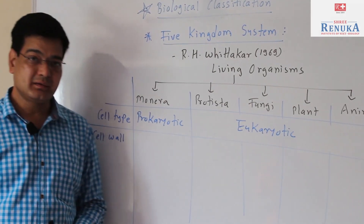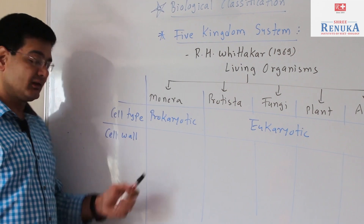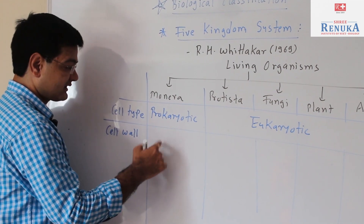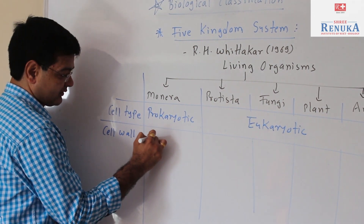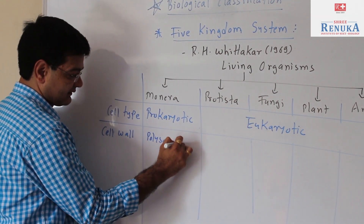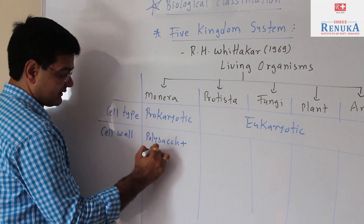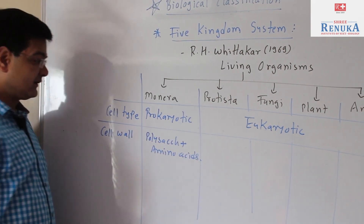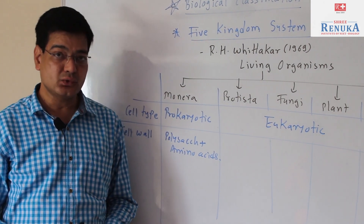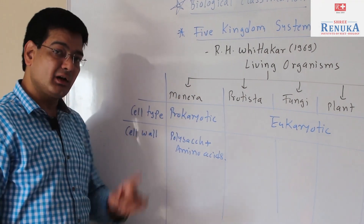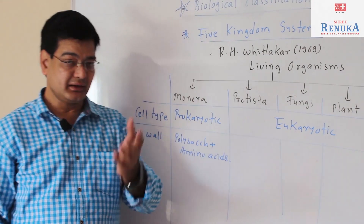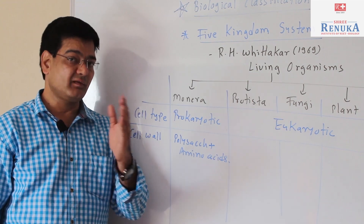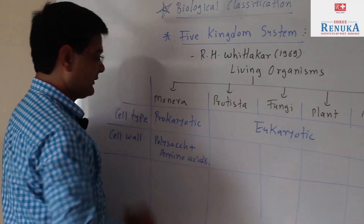The second characteristic of the phylogenetic system is based on the cell wall. In the case of Monera, the cell wall is formed of polysaccharides plus some amino acids. There is no cellulose in the cell wall constitution; instead it is formed of peptidoglycans — that is, polysaccharides and some amino acids present in the cell wall of moneran organisms.